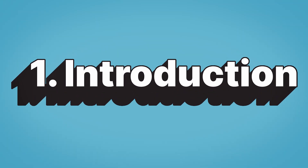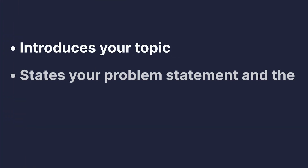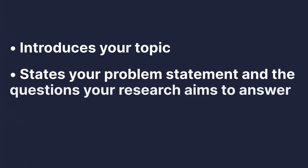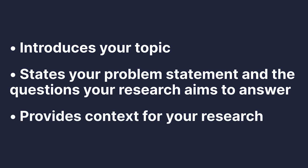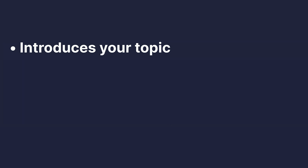A research proposal follows a fairly straightforward structure. In order to achieve the goals described in the previous section, nearly all research proposals include the following seven sections. One: Introduction. Your introduction achieves a few goals — it introduces your topic, states your problem statement and the questions your research aims to answer, and provides context for your research.